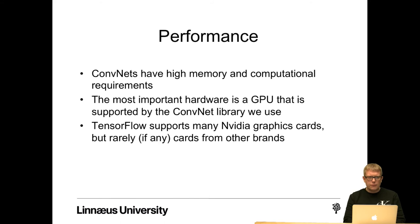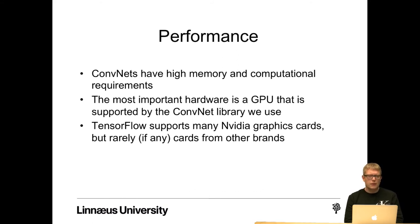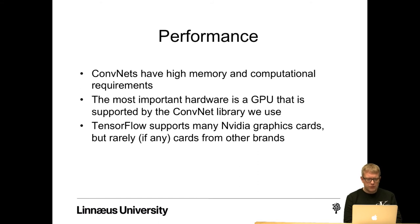ConvNets and other deep convolutional neural networks — depending on the architecture — generally have high memory and computational requirements. The most important hardware is the GPU since ConvNets can benefit from highly parallelized operations. We need hardware that is supported by the ConvNet library we currently use. For example, Google's TensorFlow supports many NVIDIA graphics cards but rarely cards from other brands.